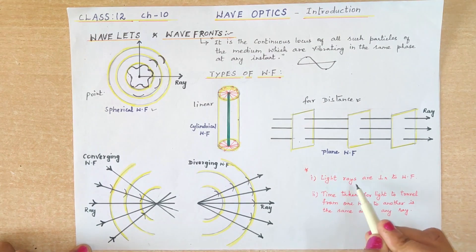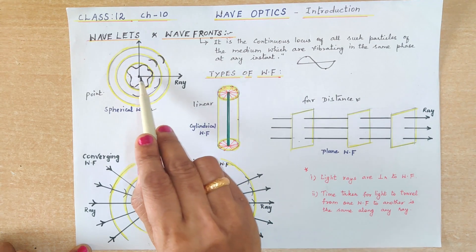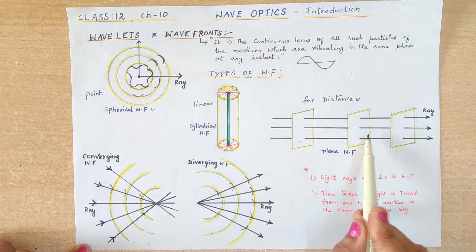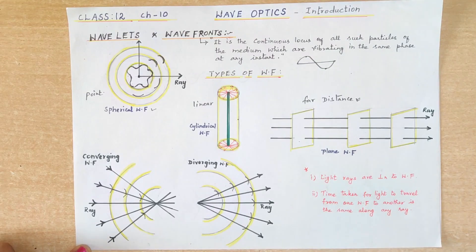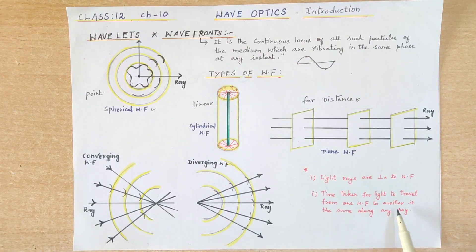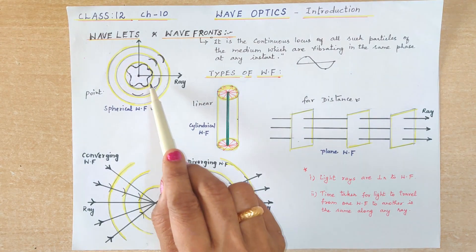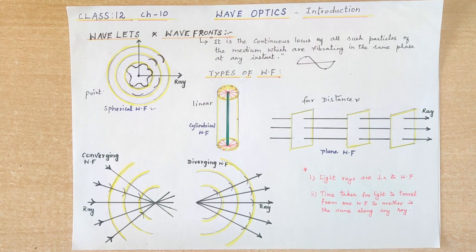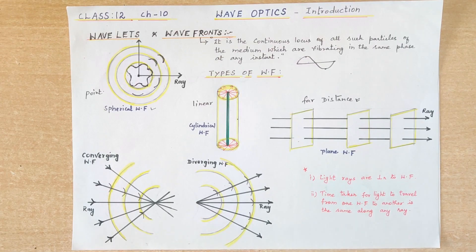You can conclude here that light rays are perpendicular to the wavefront — you can see the rays which are perpendicular in all directions. Also, the time taken for light to travel from one wavefront to another is the same along any ray. This is the introduction to wave optics. In this chapter, we are going to discuss the properties of light: diffraction of light, interference of light, and polarization of light. I hope you understood this introduction very well. Thank you for watching.